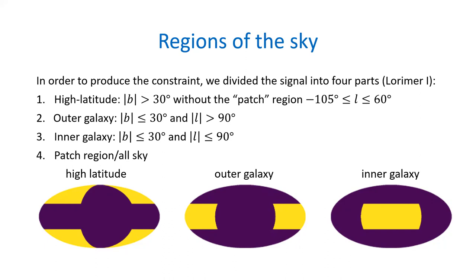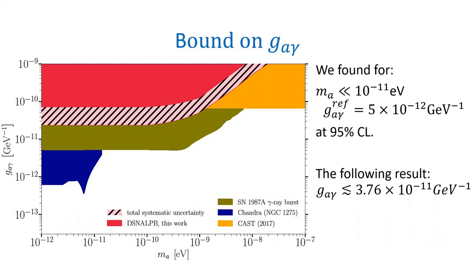From the data comparison with our expectation, we gave a bound on the ALP parameter space — the G_aγ versus mass plane — excluding the region above the total systematic uncertainty line. For ultralight axion-like particles with mass less than 10^{−11} eV, at 95% confidence level, we find that G_aγ is less than approximately 3.76 × 10^{−11} GeV^{−1}.